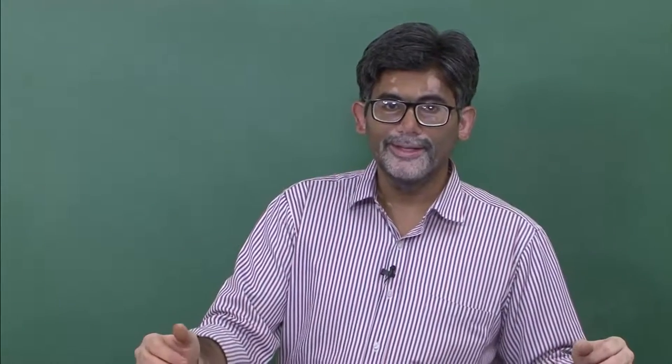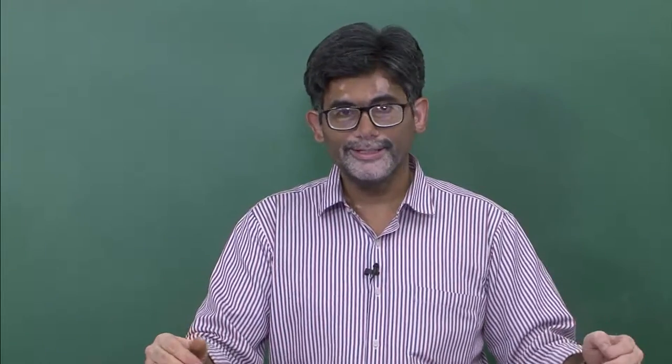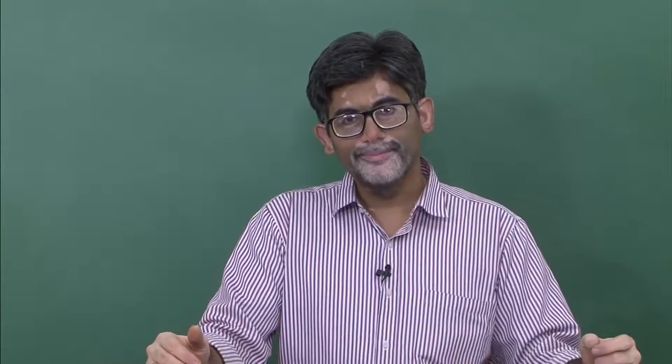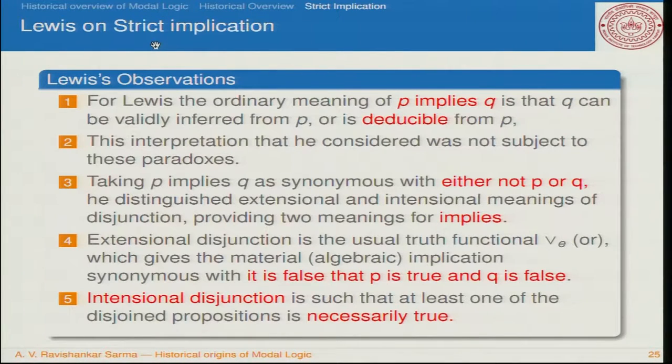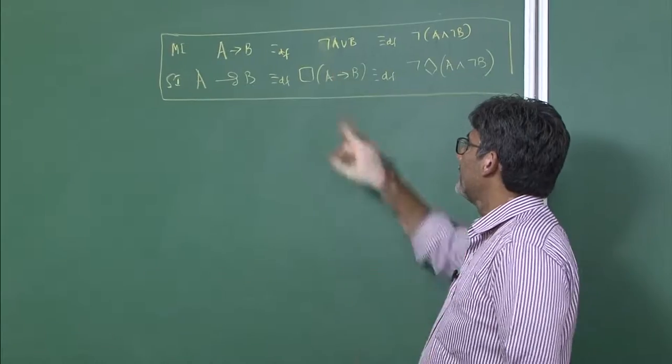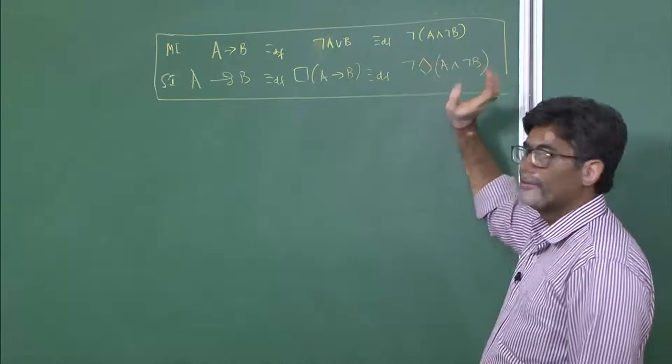Here are some of C. A. Lewis's important observations on strict implication. First of all, he is not happy with Russell and Whitehead when they talked about material implication. According to Lewis, material implication does not imply that Q is deduced from P. Q is deduced from P is not just material implication, but the antecedent of the conditional has to be strictly hooked to the consequent Q.